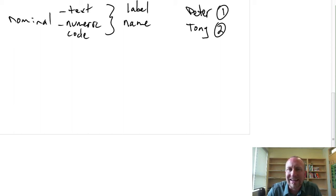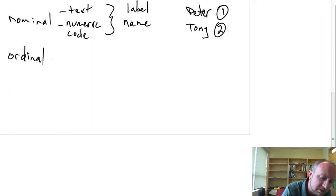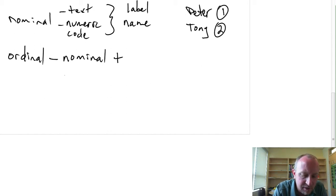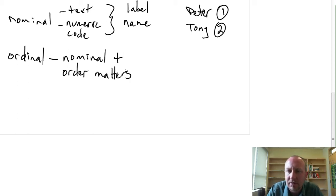Okay, the next variable in terms of the amount of information that it contains is what we would call an ordinal variable. This contains all of the characteristics of a nominal, plus, as the name sort of suggests, now the order matters, or they can be ranked. The ranking of individual data points has some additional meaning.